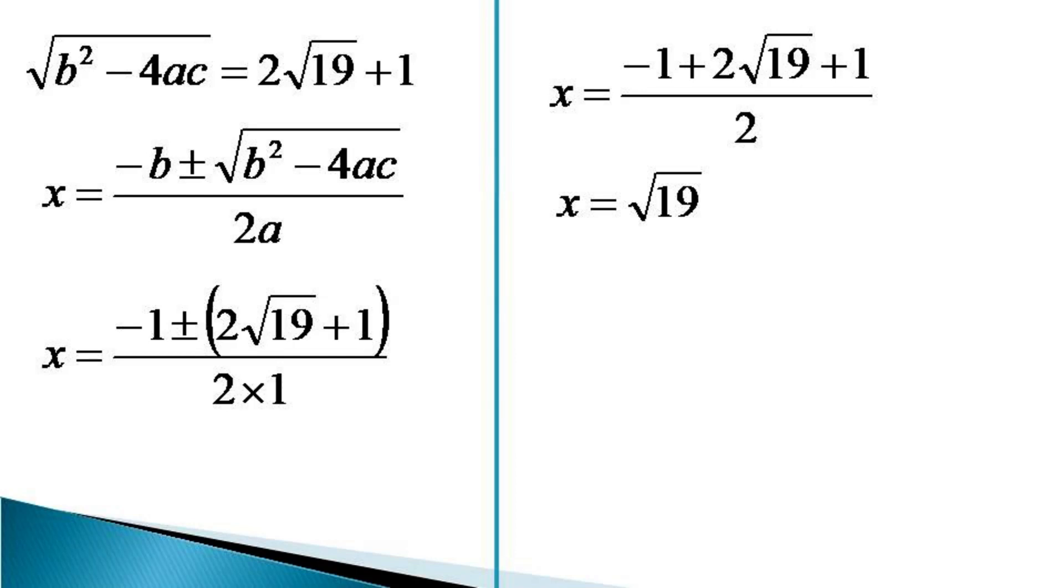This is the first value of x and it comes through normal observation also. And for the second root we take the negative sign and the value of x becomes equal to (-1 - 2√19 - 1)/2.